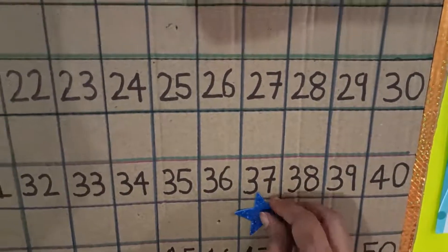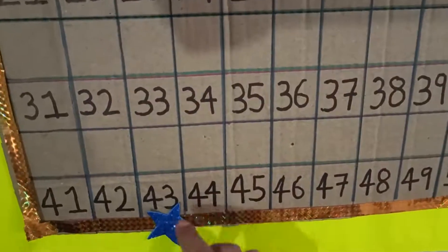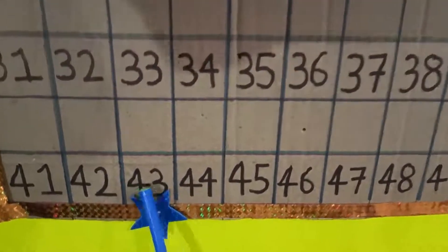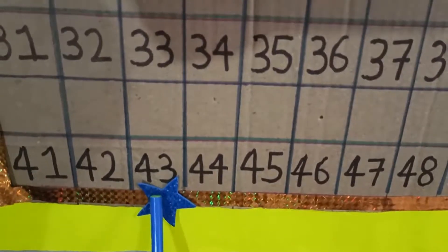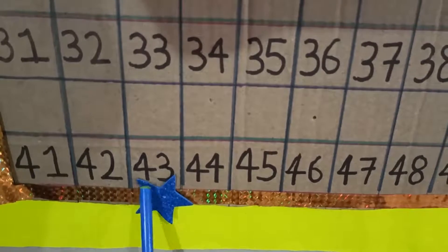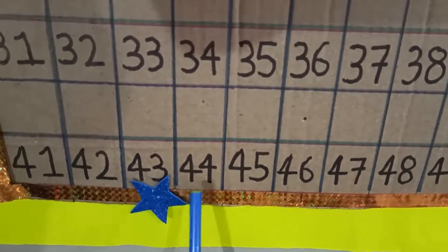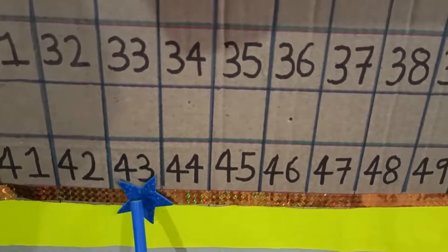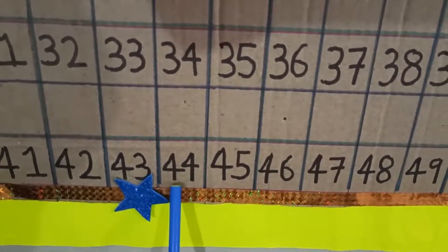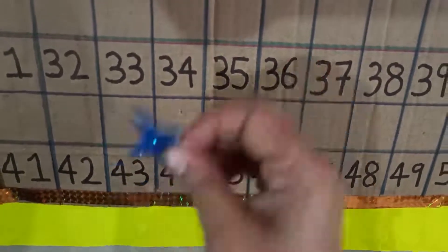Now I am keeping the star on number forty-three. What is the before number of forty-three? Look here — forty-two is before forty-three. And what is the after number of forty-three? See — forty-four comes after forty-three.